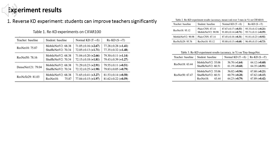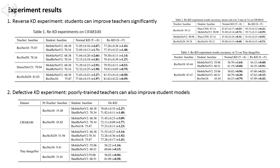As for defective KD, we found that the poorly trained teachers can also improve student models. On CIFAR-100 and Tiny ImageNet, the teacher models are poorly trained with only 1 or 10 epochs, with very poor performance, such as 15.48% accuracy on CIFAR-100.